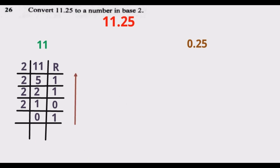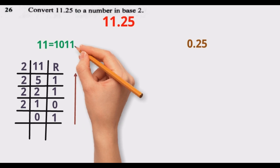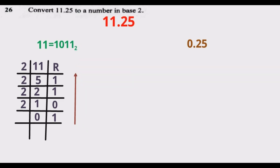Now I'm going to write the answer. The answer comes from the remainders, starting with the last remainder to the first remainder. So reading bottom-up: 1, 0, 1, 1. That is 11 in base 2 — 1011.